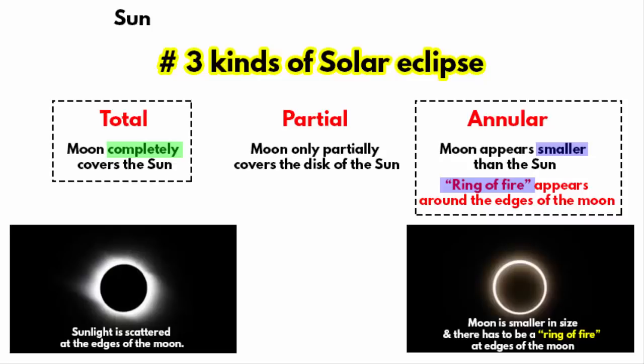Because the moon will not be able to completely block out the sun's light. As a result, there is a ring of fire around the moon's outline in the sky.